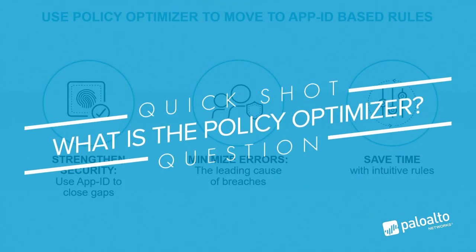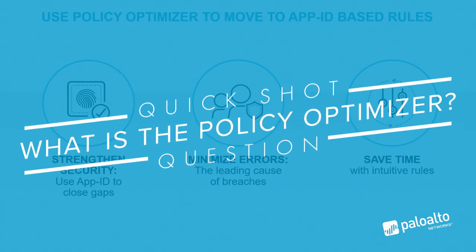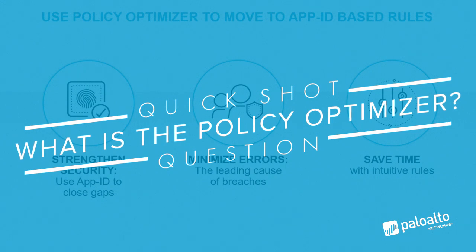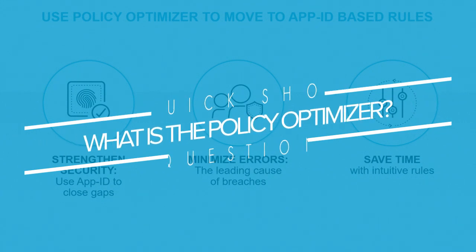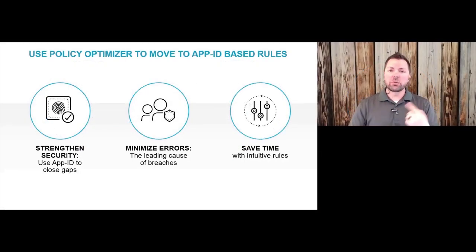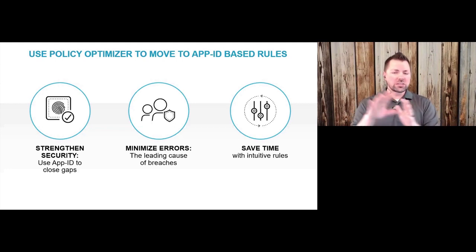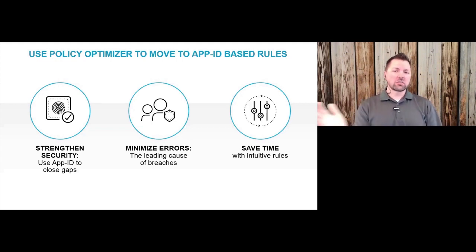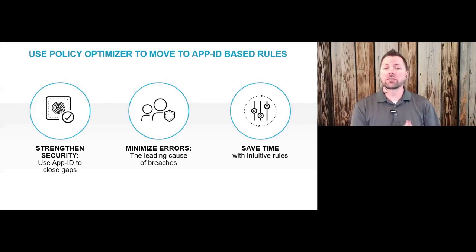The key thing about the policy optimizer is it allows you to spot those gaps in your prevention posture and close them up by converting those legacy port-based rules over to App ID-based rules. This is not necessarily a manual process. The policy optimizer runs in the background, constantly watching all of the data logged by the firewall, and puts that into a separate database. At the top of every hour, it makes the results of the findings available in the policy optimizer section of your policies tab.